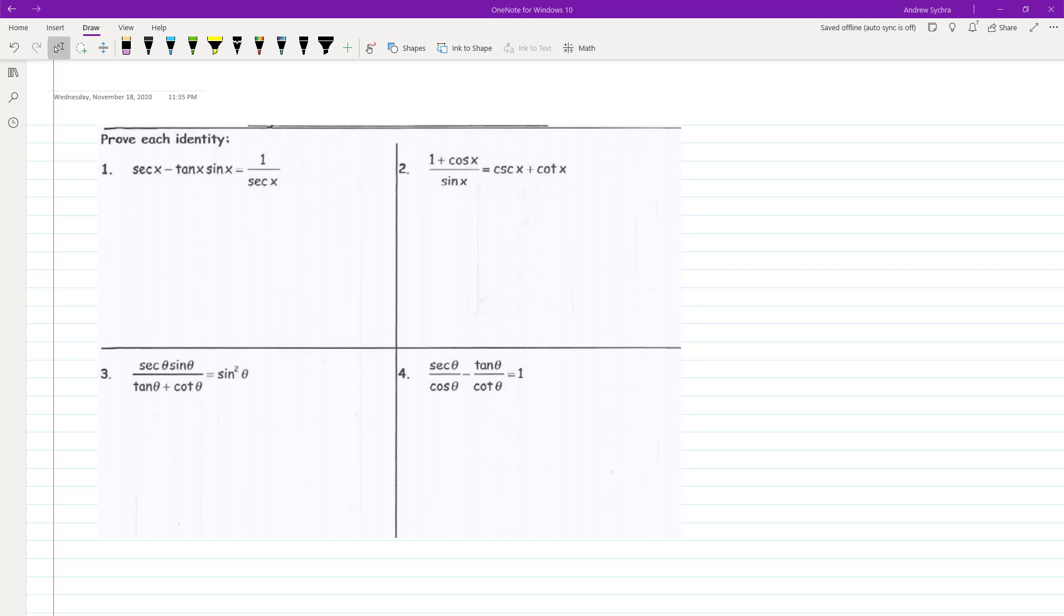So first off, we want to make the left look like the right. So first thing we can do is convert these into their basic components. So you get 1 over the cosine of x minus, and then tangent can be converted into sine of x over cosine of x. And then we have sine of x on top here. So this can be converted to 1 minus sine squared of x over cosine of x.